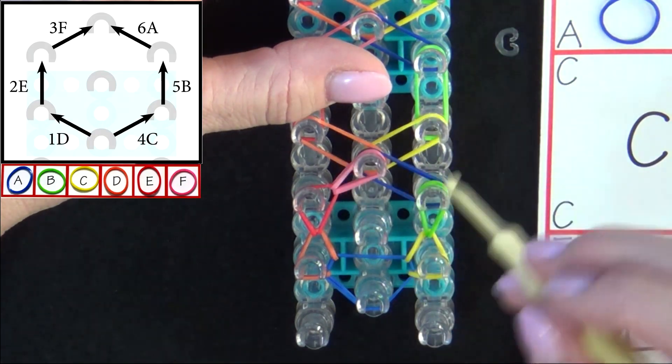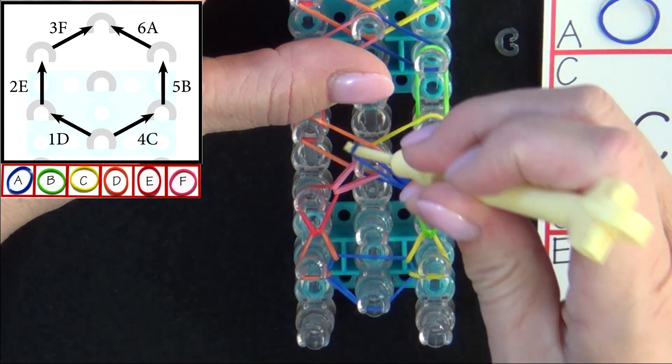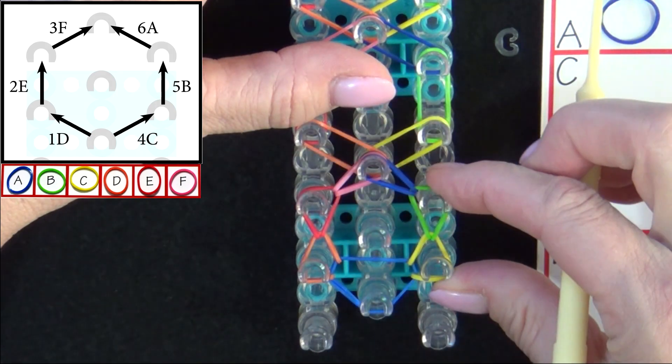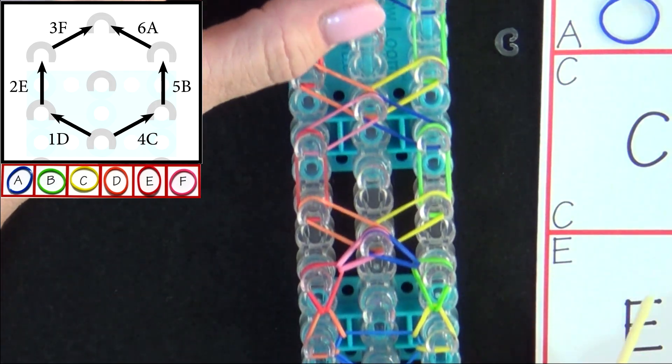Band 6A will be looped to the center. And there we've finished looping our first hexagon. Let's move to the next one.